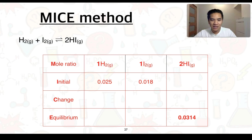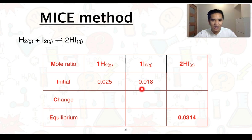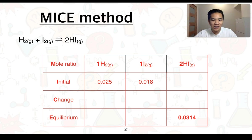We transfer this data into a MICE table showing the reaction. MICE stands for: M = mole ratio of reactants and products, I = initial concentration, C = change in concentration, E = equilibrium concentration. The initial concentrations of H₂ and I₂ are entered, and the equilibrium concentration of HI (0.0314 mol/L) is placed in the equilibrium row. Since the reaction starts with no product, the initial concentration of HI is zero.